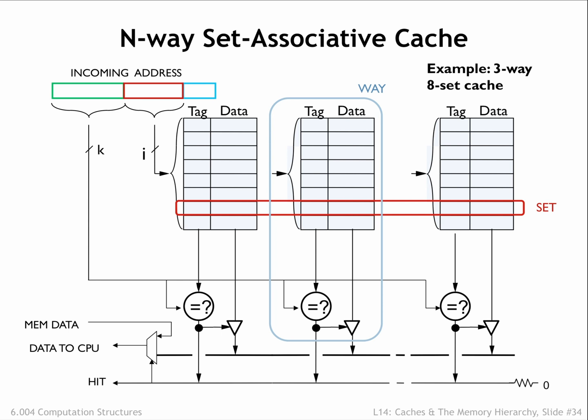The hit logic in each way operates in parallel with the logic in other ways. Is it possible for a particular address to be matched by more than one way? That possibility isn't ruled out by the hardware, but the set associative cache is managed so that doesn't happen. Assuming we write the data fetched from DRAM during a cache miss into a single sub-cache, there's no possibility that more than one sub-cache will ever match an incoming address.